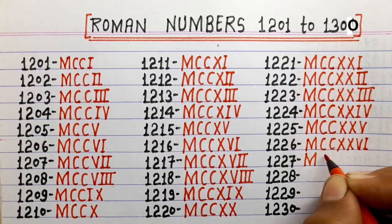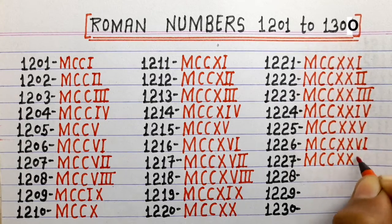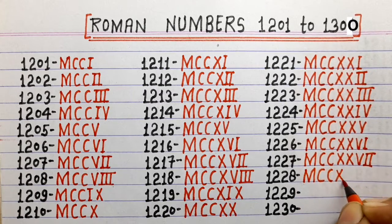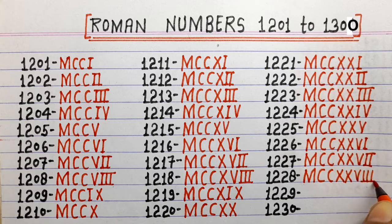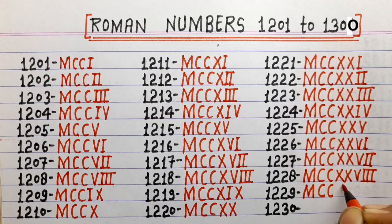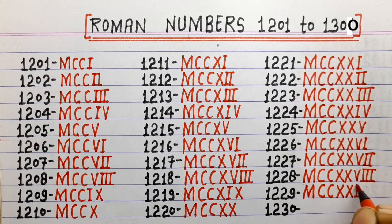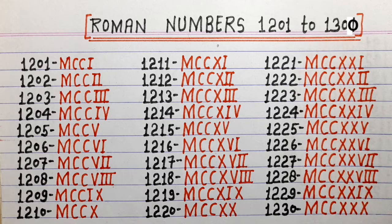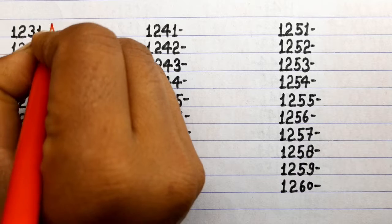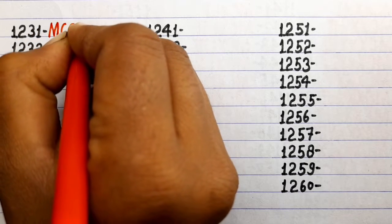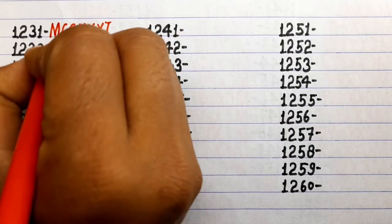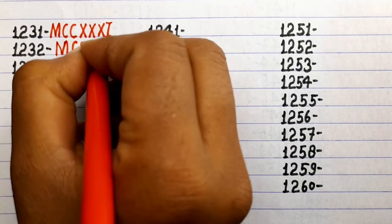1227 MCCXXVII, 1228 MCCXXVIII, 1229 MCCXXIX.